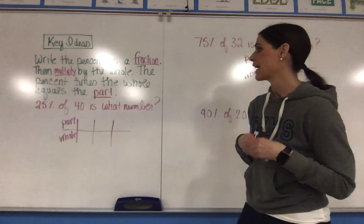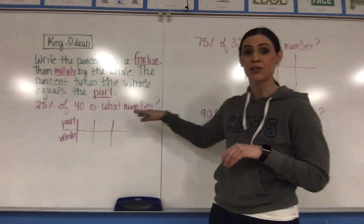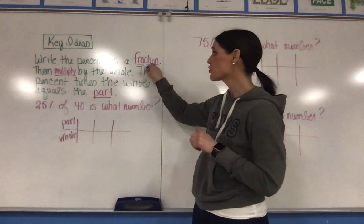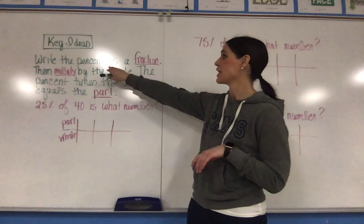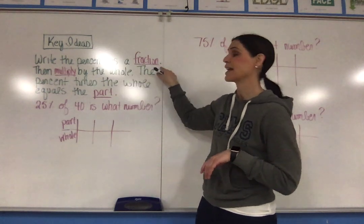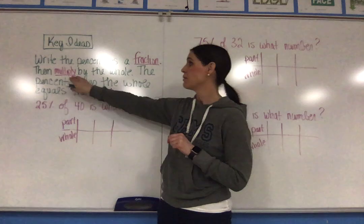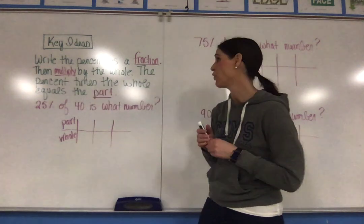Today we're going to take a look at finding the part of a number. So up here in the key ideas, the first thing you're going to do is you're going to write the percent as a fraction, then multiply by the whole.